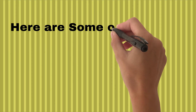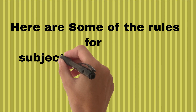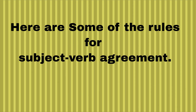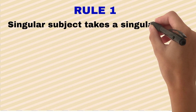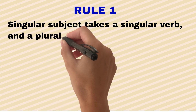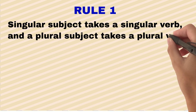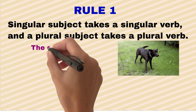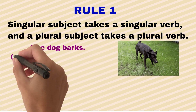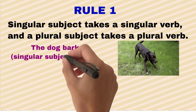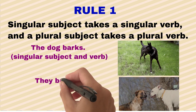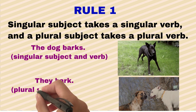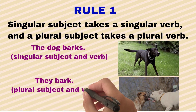Now we will discuss some of the rules for subject-verb agreement. Rule number one is: a singular subject takes a singular verb, and a plural subject takes a plural verb. For example, 'The dog barks' has a singular subject, so 'barks' is a singular verb. 'They bark' — here the subject is plural, so the verb is also plural.